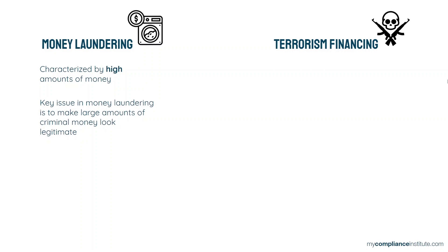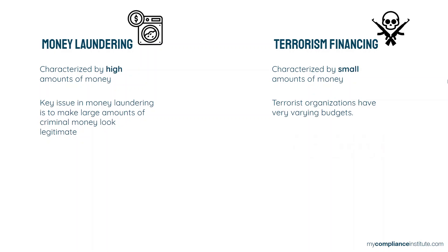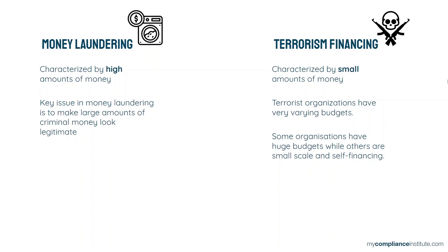Terrorism financing, on the other hand, is very often characterized by small amounts of money. Terrorist organizations have varying budgets — ISIS had a phenomenal budget, the same goes for the FARC in Colombia and other terrorist organizations. Some organizations have huge budgets while others are small-scale and self-financing. However, the amounts involved in the financing of terrorist acts, the daily expenses, or the donations to a network are usually relatively small.